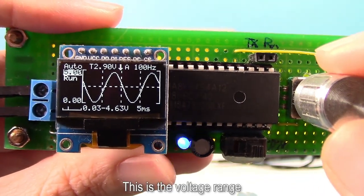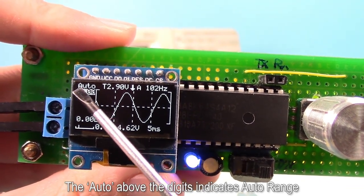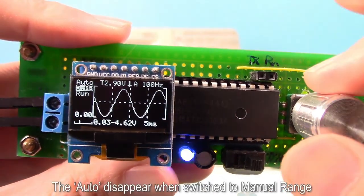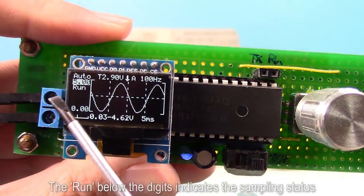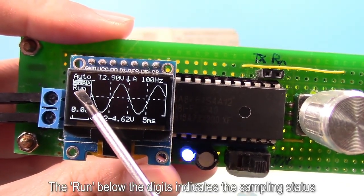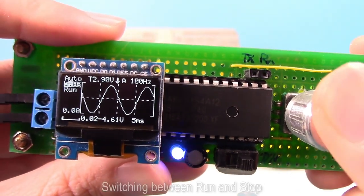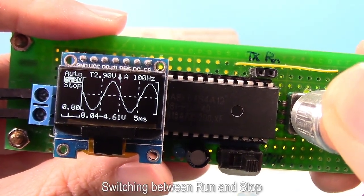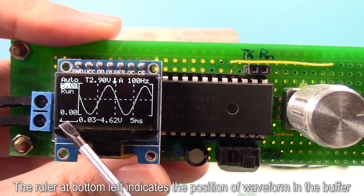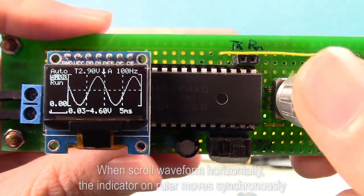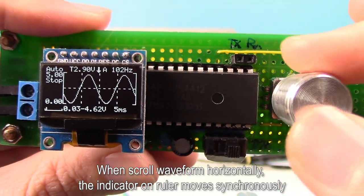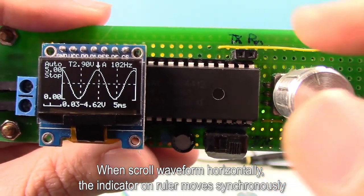This is the voltage range. The auto above the digits indicates auto range. The auto disappears when switched to manual range. The run below the digits indicates the sampling status, switching between run and stop. The ruler at bottom left indicates the position of waveform in the buffer. When scrolling waveform horizontally, the indicator on ruler moves synchronously.